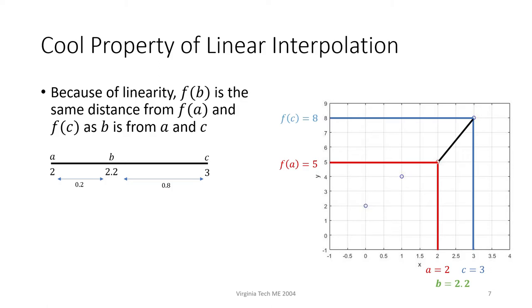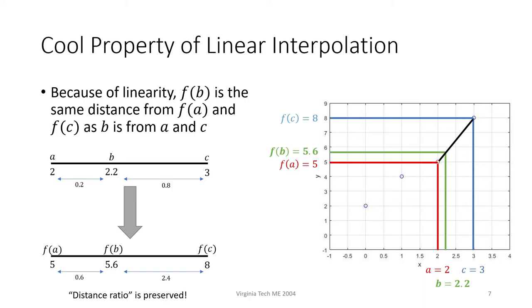If you use the formula on the previous slide, you'll find that f(b) equals 5.6. The distance between f(b) and f(a) is 0.6, and the distance between f(b) and f(c) is 2.4, so we see that f(b) is also 4 times closer to f(a) than it is to f(c). Linearity will guarantee that this so-called distance ratio is preserved in the output.